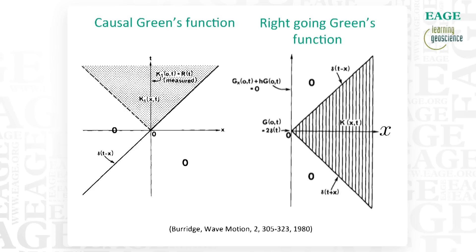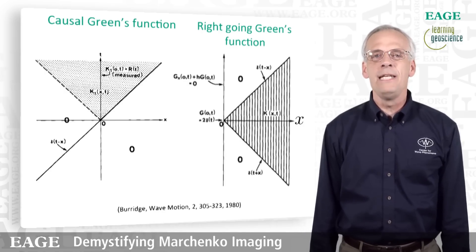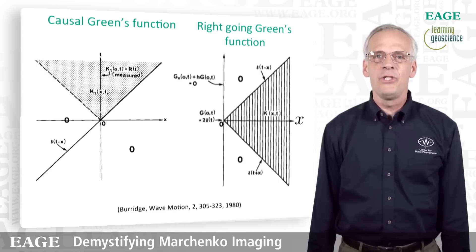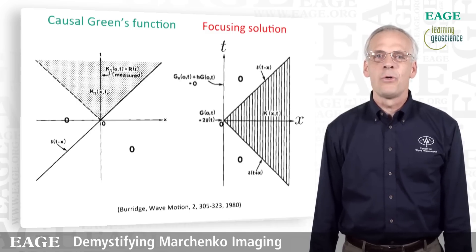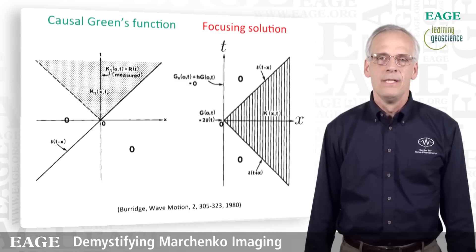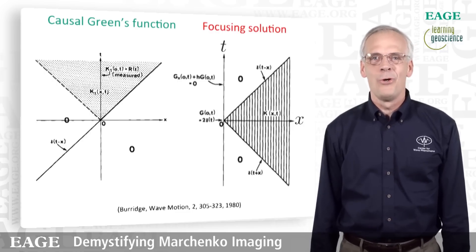I mentioned earlier the Marchenko equation and the function K of x and t. The striped area on the right gives the support of this function K of x and t — it looks like a cone rotated 90 degrees. This function K of x and t can be interpreted as a right-going Green's function: it is only non-zero to the right of the source. This contains the answer to why we don't need to know the medium between our acquisition point and reconstruction point, because the function we are solving for is a different type of Green's function — in our work on Marchenko imaging we call it a focusing solution. This is a wave field that focuses at the point of this cone, propagating from our acquisition points to the reconstruction points.